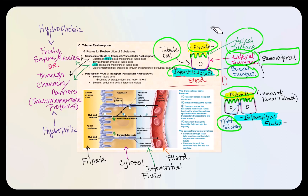This leads us into the routes of reabsorption of substances — where we take solutes found in filtrate and bring them back into blood. The first way is through the transcellular route, or transcellular transport. Transcellular means through the cell: the substance enters the apical surface, passes through the cytosol, and exits through the basolateral membrane — more often through the basal surface — then enters the interstitial fluid, and from there enters blood through the endothelium of the peritubular capillaries.